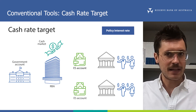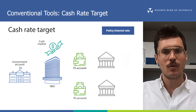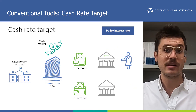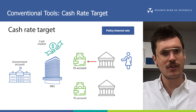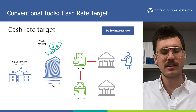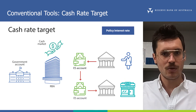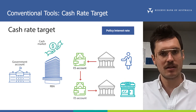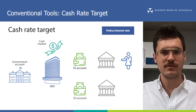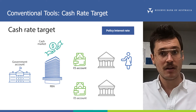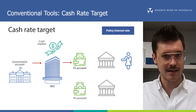Commercial banks exchange ES balances between each other with the RBA and with the government every day. When you direct your bank to pay money to someone who uses another bank, say by paying for clothes on your debit card, your bank will transfer cash from their ES account to the other bank's ES account. The other bank will then pay the business that sold you the clothes. Therefore, to make payments happen across the economy, banks must exchange cash between each other in their ES accounts. Similarly, if you receive cash from the government, for example from Medicare, it will find its way to you via your bank's ES account at the RBA.